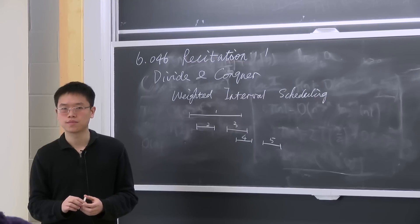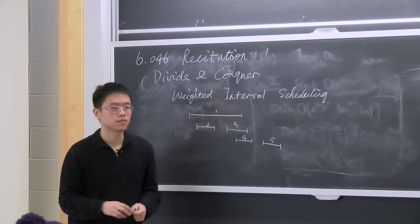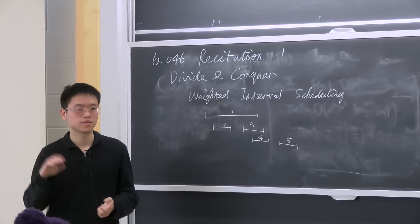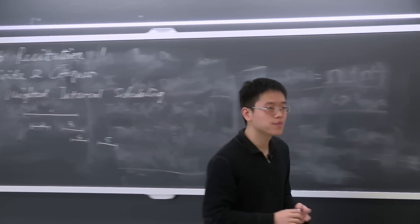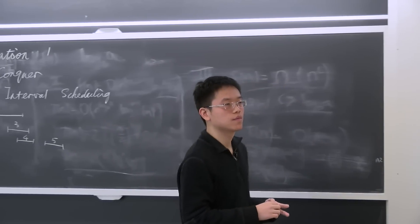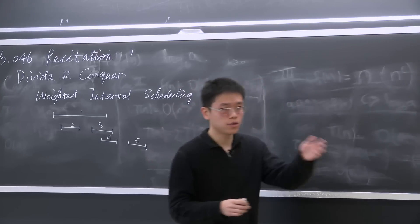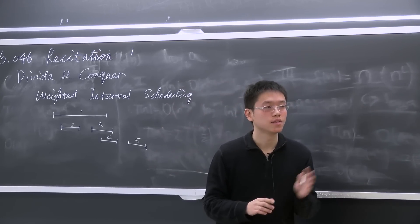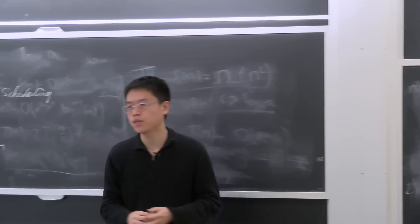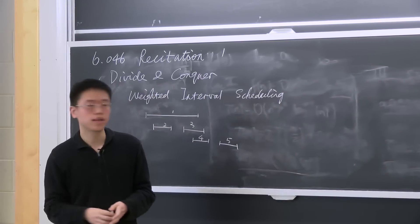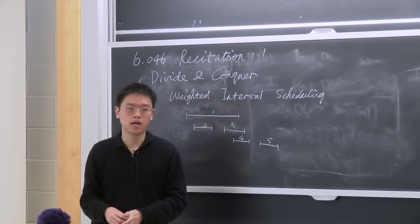A student volunteers: we pick the earliest finish time for the next interval — find the next non-conflicting interval at the earliest finish time, then pick that. The TA clarifies: the version described is for the unweighted case. In the unweighted case, we just schedule the one with the earliest finish time, remove all incompatible ones, and keep going. That solves the unweighted version.